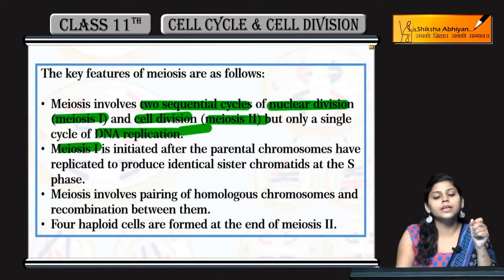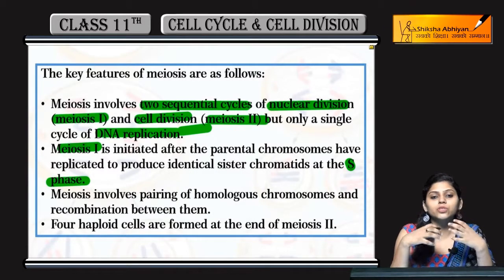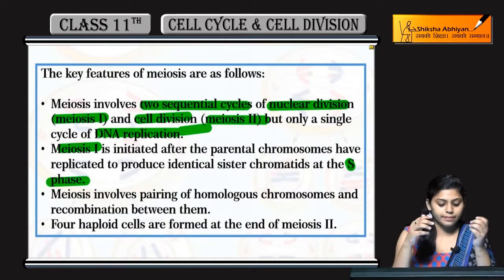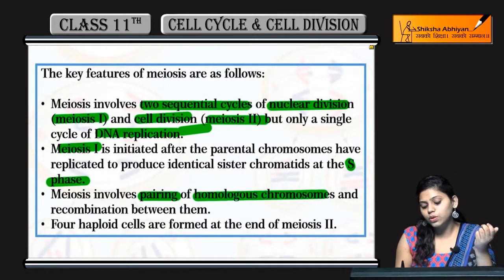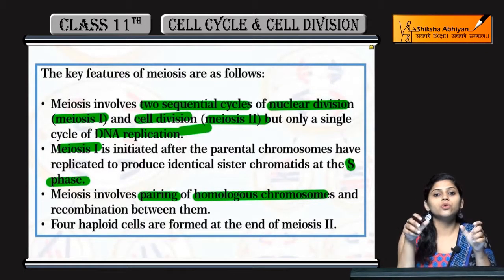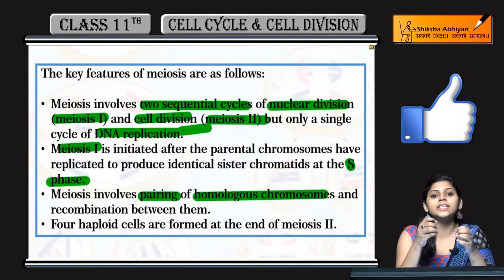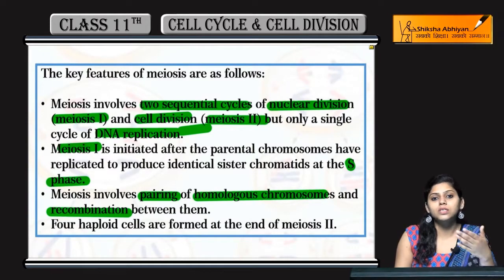Meiosis one जो है, वो initiate होता है after S phase. जब DNA synthesis/replication/duplication हो जाएगी, then cell prophase one of meiosis one में enter करेगा. Meiosis involves pairing of homologous chromosomes — जो homologous chromosomes होंगे वो pair आएंगे, pairing करेंगे, recombination करेंगे, और अपना genetic material exchange करेंगे. यह recombination होती है between homologous chromosomes.